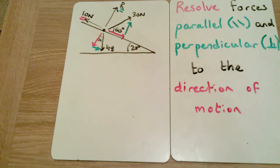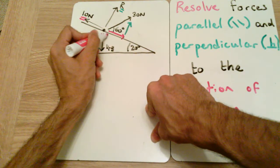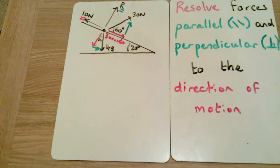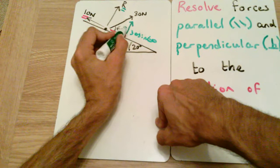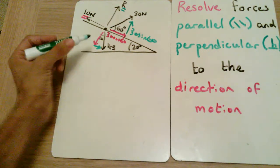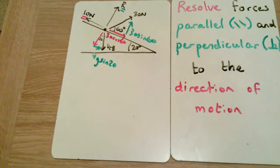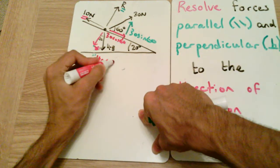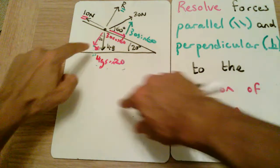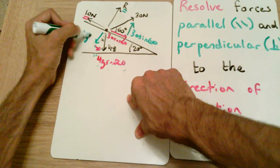With an angle of 20 degrees on the incline, the first right angle makes this 20° and 70°, so the angle inside the triangle is 20 degrees. For the 30 N force, the adjacent component (perpendicular to slope) is 30 cos 60 and the parallel component is 30 sin 60. For the 4g force, the opposite component (parallel to slope) is 4g sin 20, and the perpendicular component is 4g cos 20.